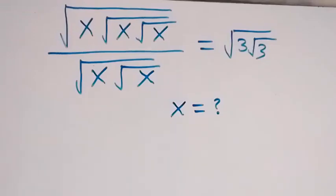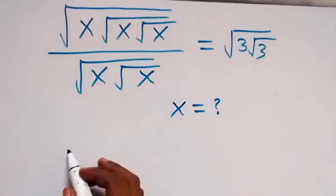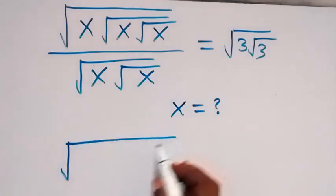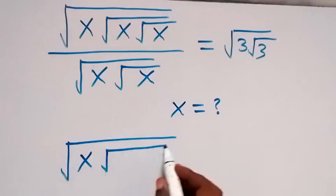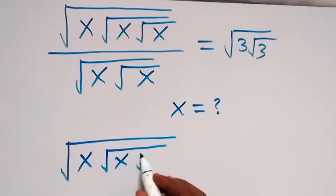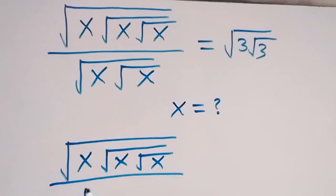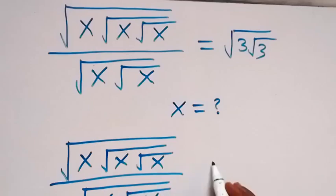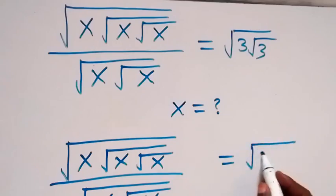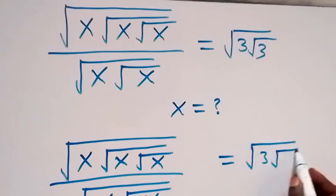Hello, you are welcome. How to solve this nice math problem involving roots. We have the square root of x, then inside that square root of x, then square root of x again in the numerator, divided by root x then inside that root x again. This equals square root of 3 times square root of 3.